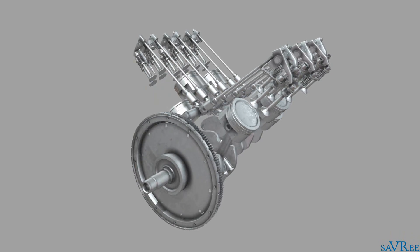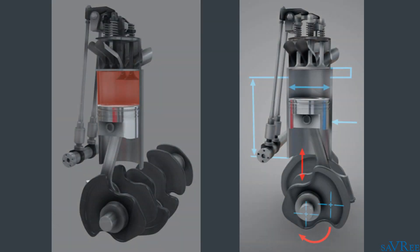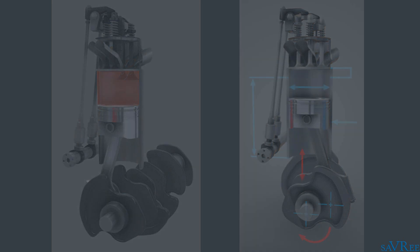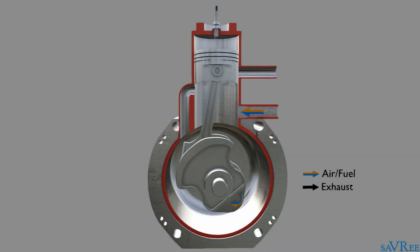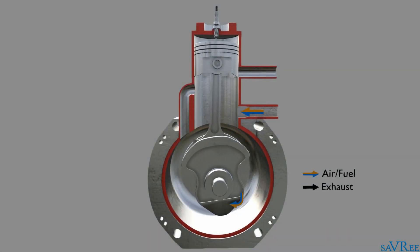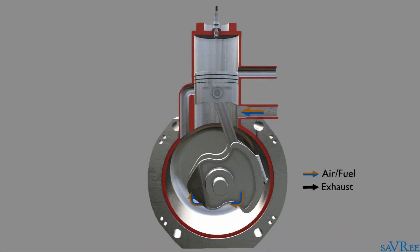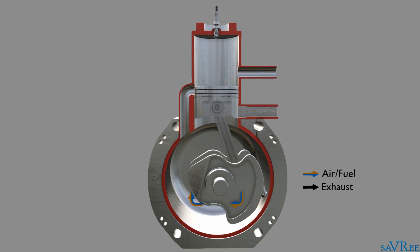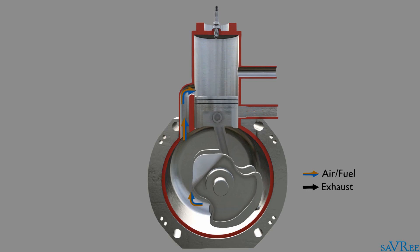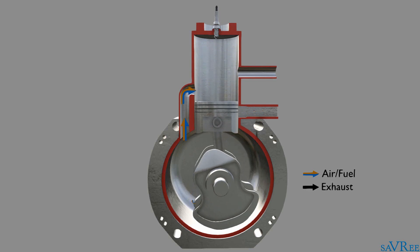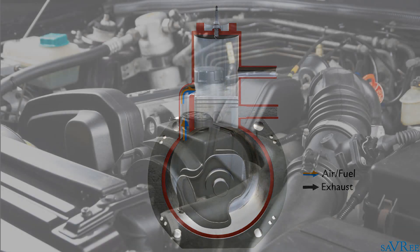By the end of the course, you should be able to identify visually all of the main components of a combustion engine, both internally and externally. You'll also know how a two-stroke engine and a four-stroke engine works, and you'll be able to list some of the differences between a gasoline engine and a diesel engine.